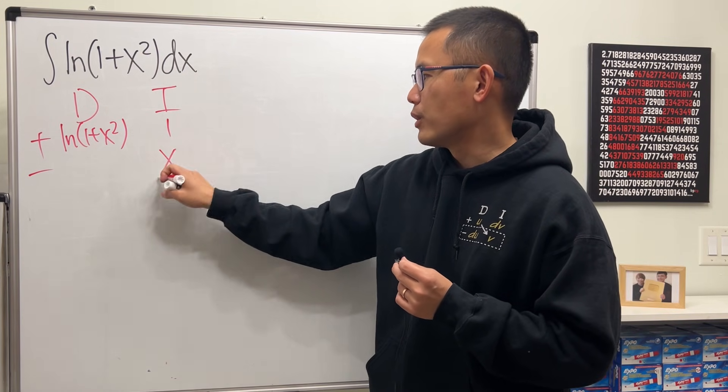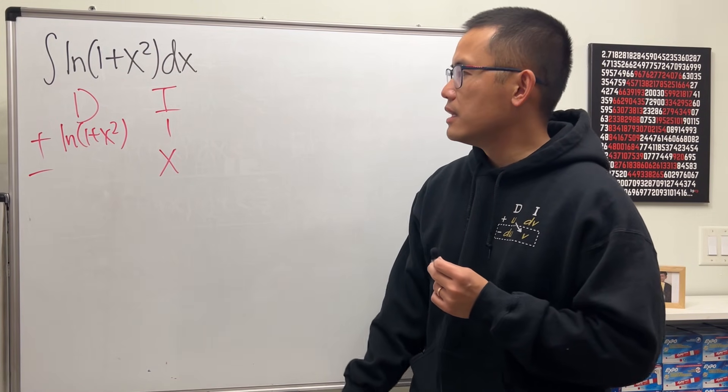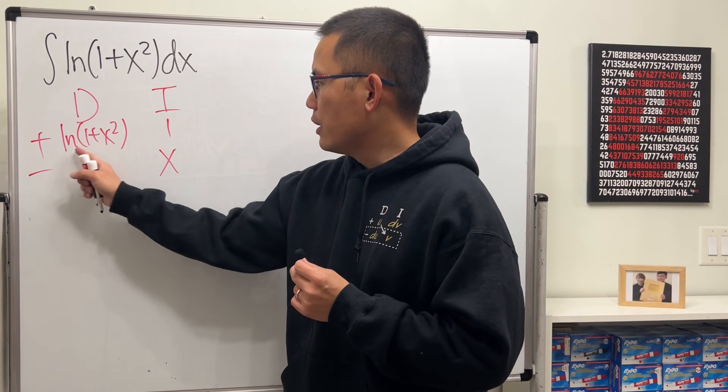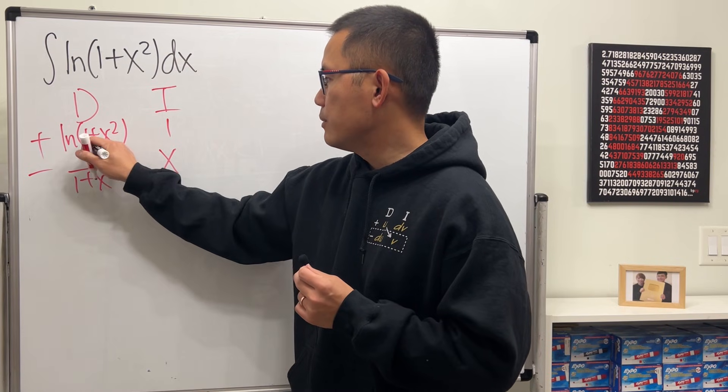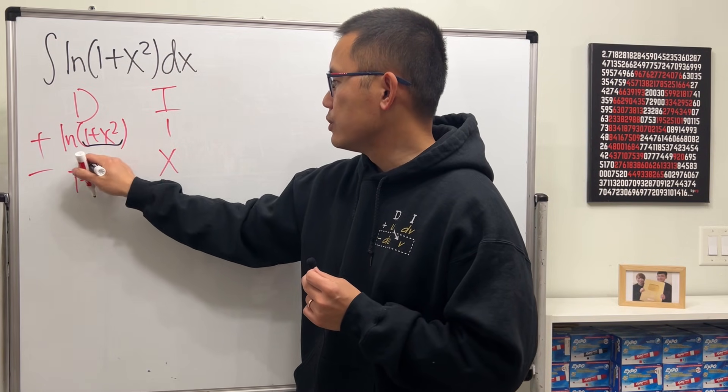Integrating 1, you can totally do that. It's just x. Differentiating ln of this, we get 1 over the inside and then multiply by the derivative of the inside, which is the 2x.